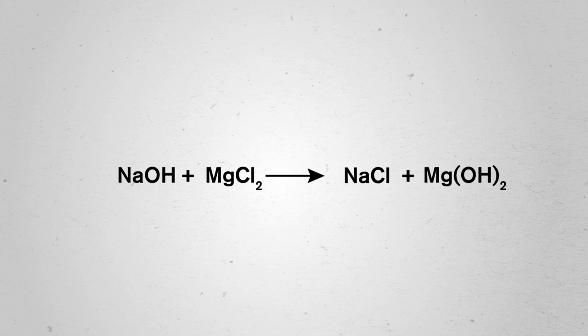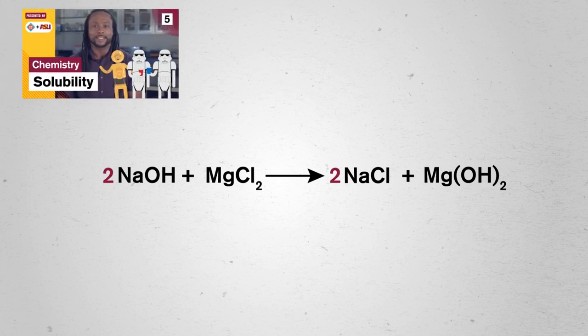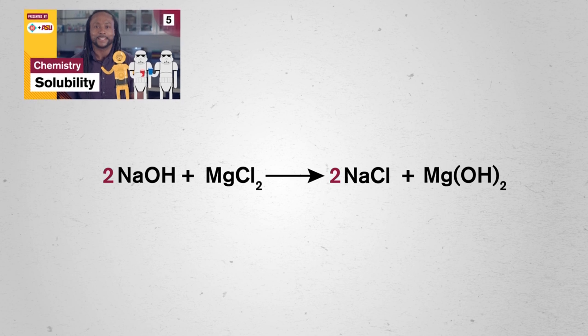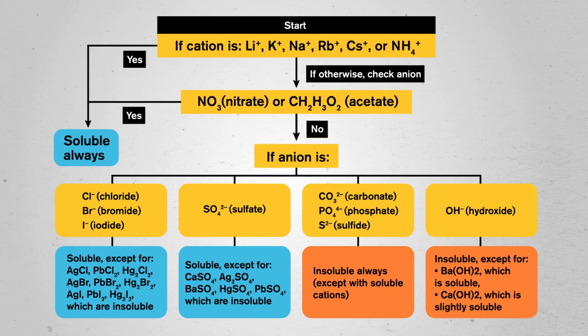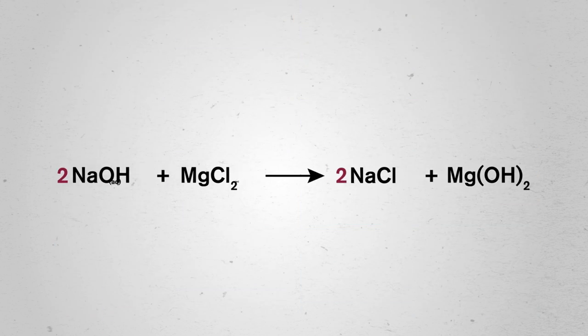Now we need to balance the reaction, adding a coefficient to sodium hydroxide and sodium chloride. Next, we need to find the states of matter for our products. Let's quickly check a solubility chart, which reads more like a flowchart. It looks like sodium and chloride are soluble in solution, so we'll mark the compound they form as aqueous. The anion hydroxide is insoluble, though, so we can say magnesium hydroxide is insoluble and will form a solid precipitate. Now we have our final balanced molecular equation.